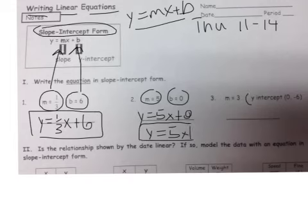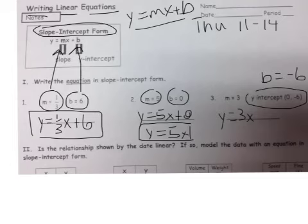This one they give us our y intercept in a little bit different way. Instead of calling it b they call it the y intercept. This is still the same thing as b equals negative 6. So y equals instead of m we put in the 3x, and instead of a plus b now we have a minus 6. So 3x minus 6.